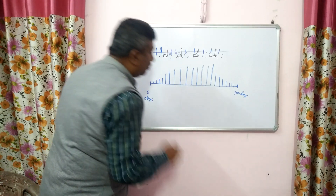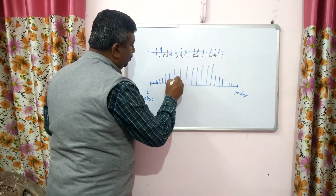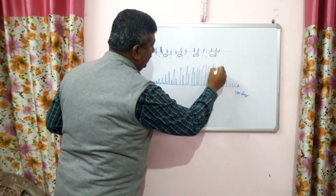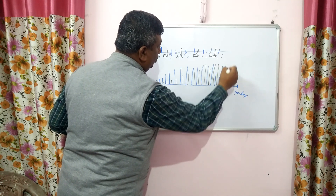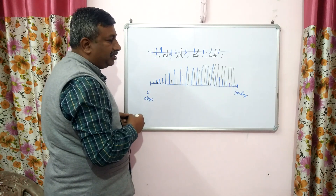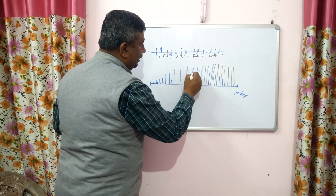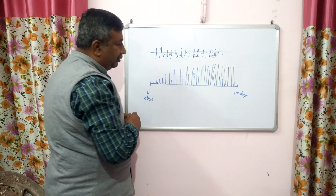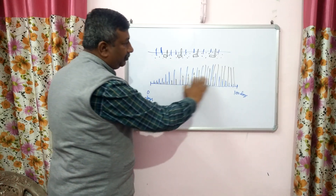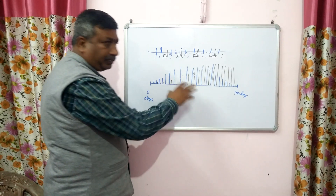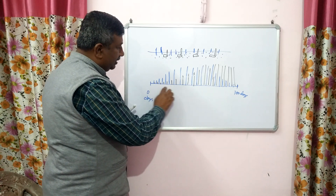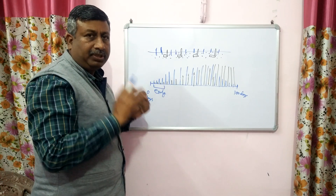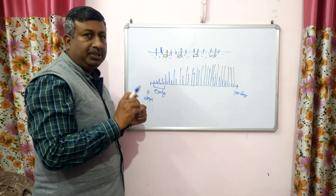Crop growth is also very slow at the early stage, then crop growth increases toward maturity. During the early stage, both crop growth and weed growth are less, so weeds do not compete with the crop — competition is very less or essentially zero during this early stage.